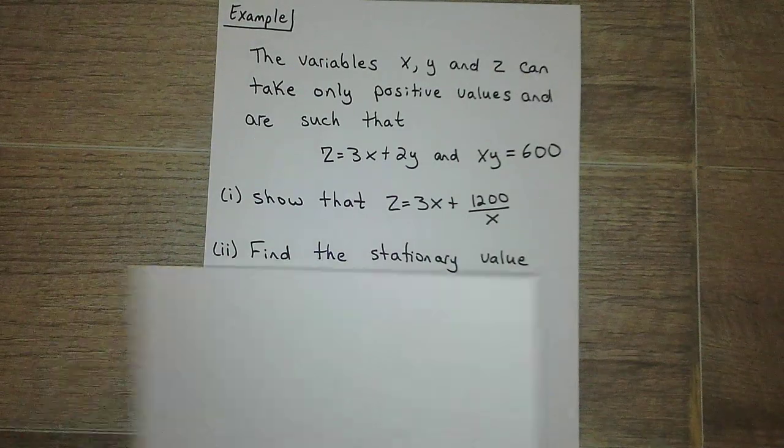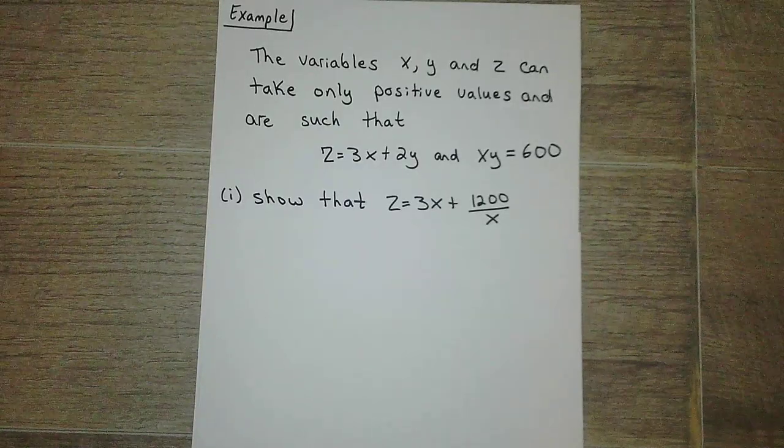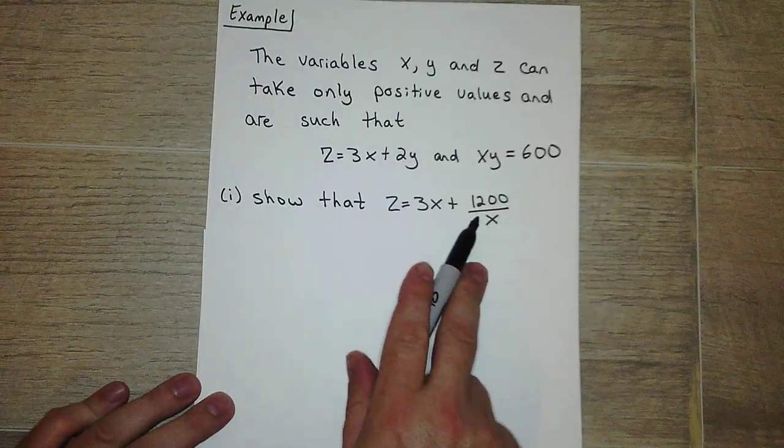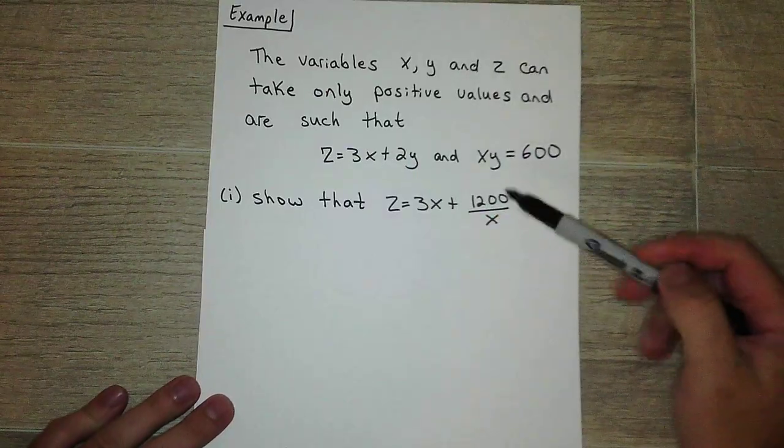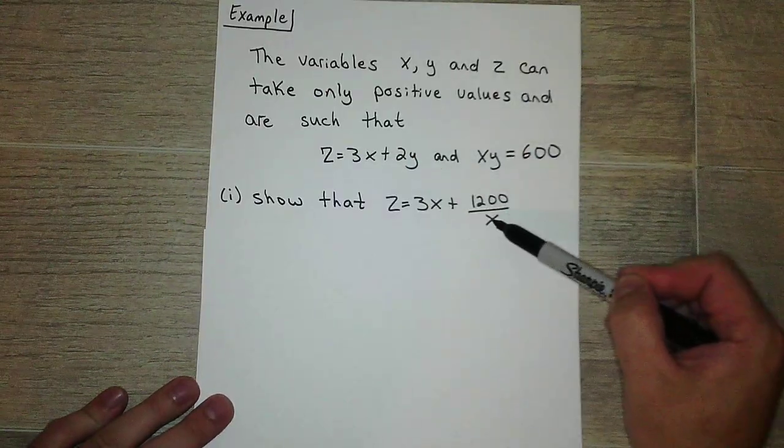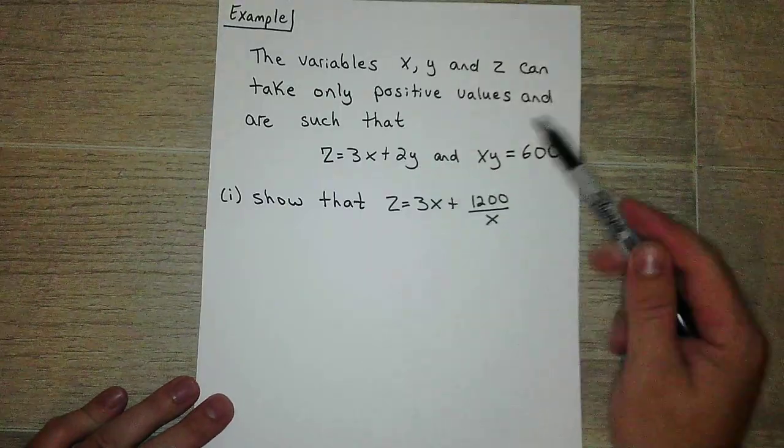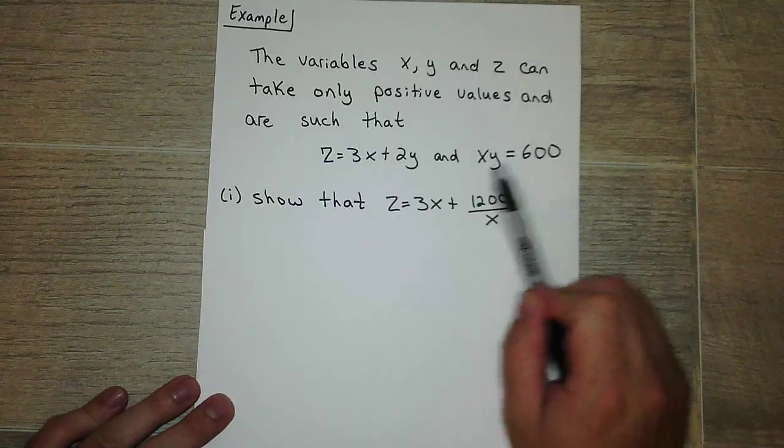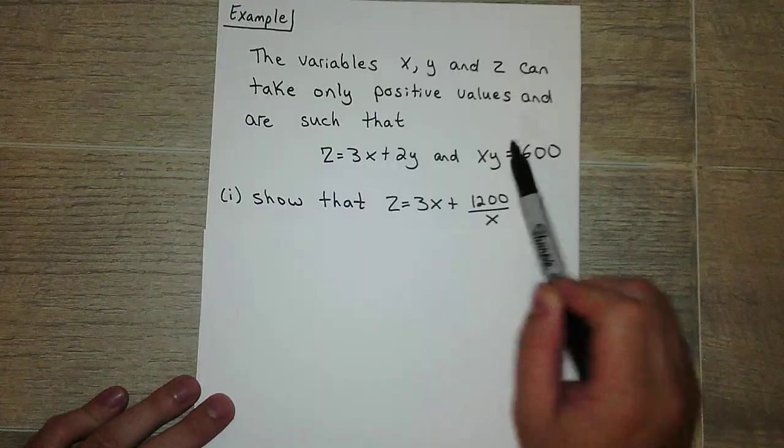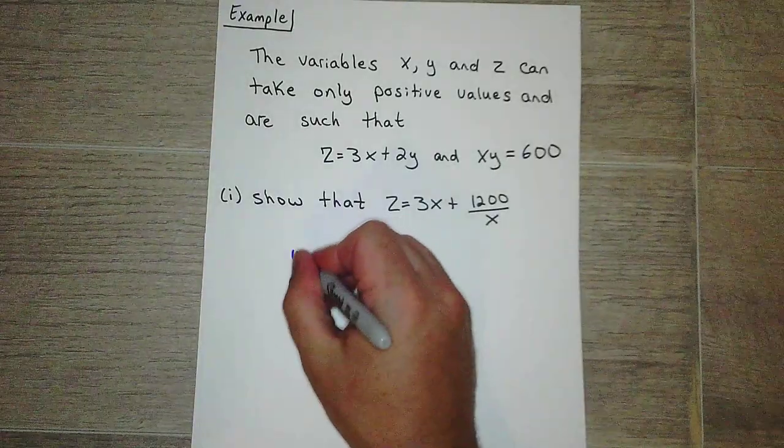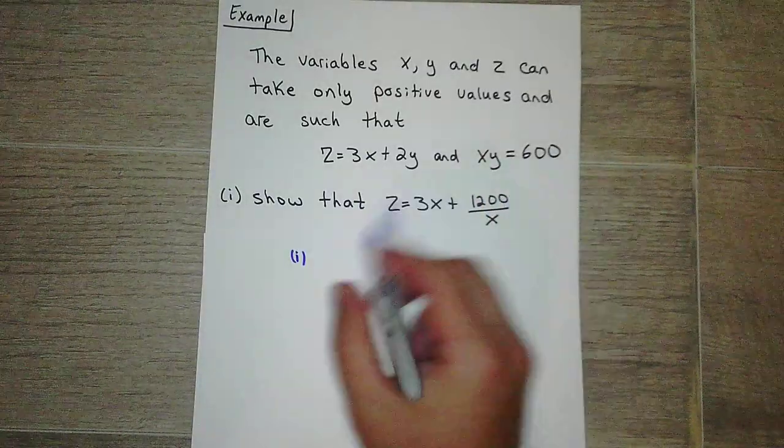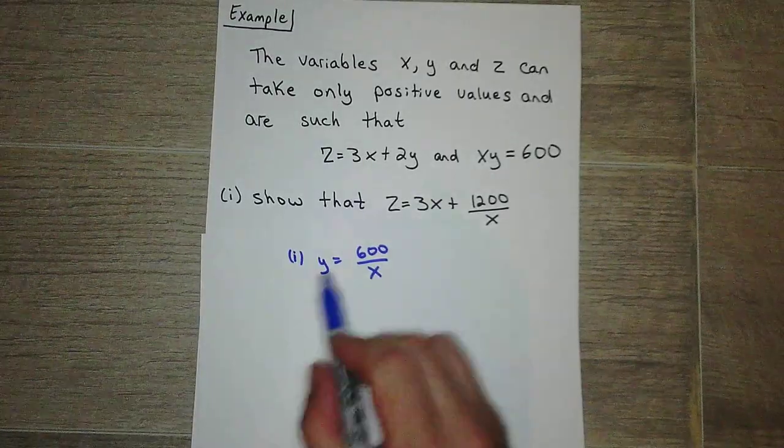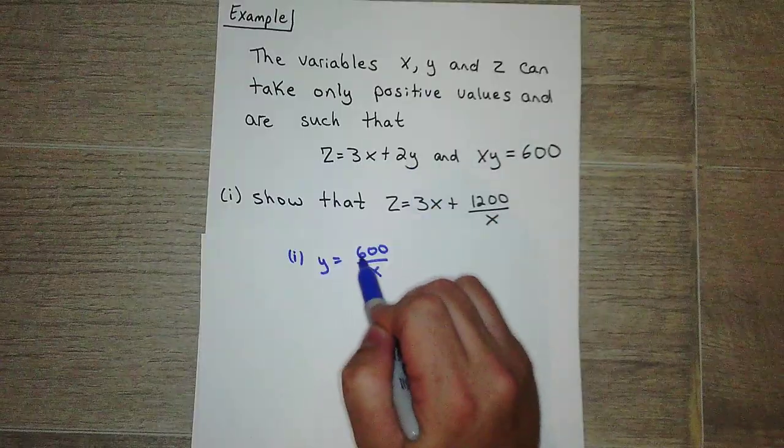Okay, so part (i): show that z equals 3x plus 1200 over x. We have this equation for z, we want to turn it into this equation. 3x and 3x are the same, so that tells me I'm not going to mess with x. But then this changed. We have an x now where we did have a y. So that tells me this little extra equation we have here, I'm going to use this to get rid of this y. So I want to solve this for y.